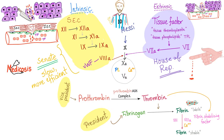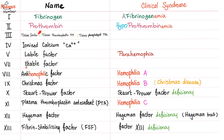Here is the coagulation cascade — extrinsic pathway, intrinsic pathway — and look at this: fibrinogen converts into fibrin, and then we stabilize the fibrin. PT, PTT, TT. We have discussed the clotting factors before, and now let's talk about the pathology.